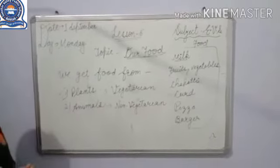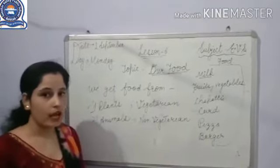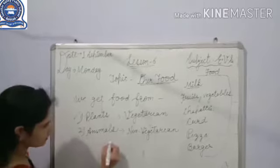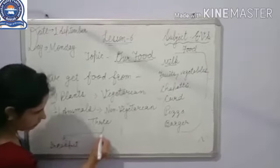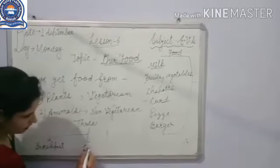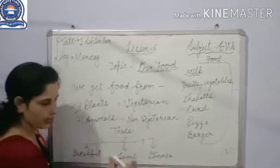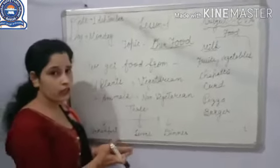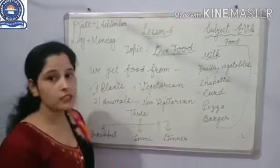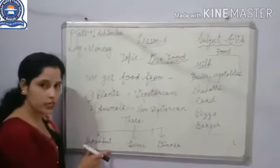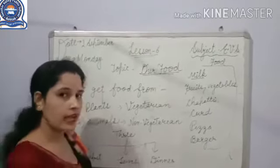How many meals should we take in a day? We should take three meals in a day. The first one is breakfast, the second one is lunch, and the third one is dinner. We take breakfast in the morning time, lunch in the afternoon time, and dinner at night time.